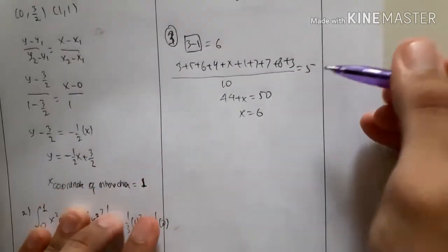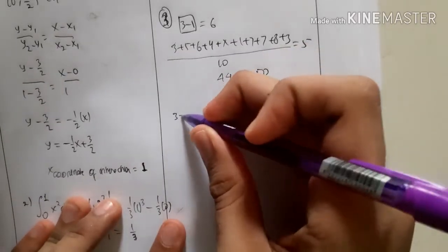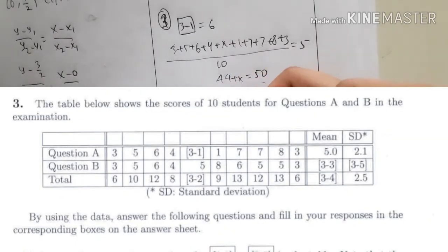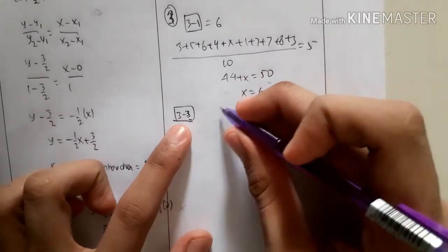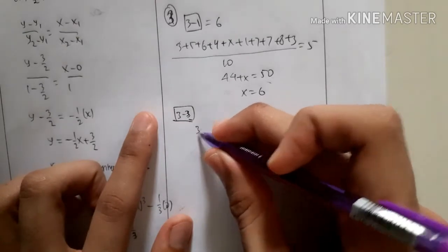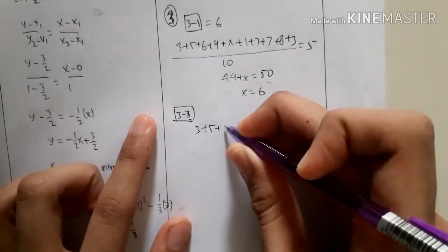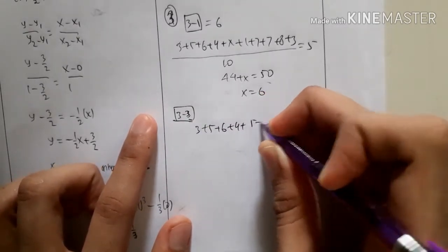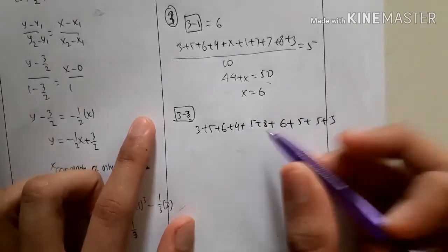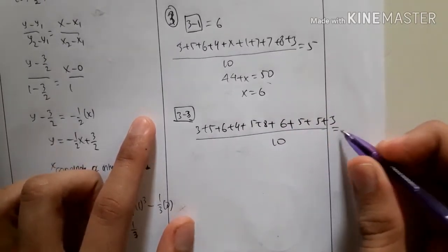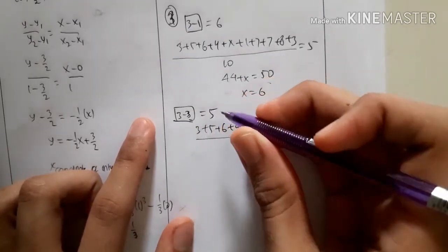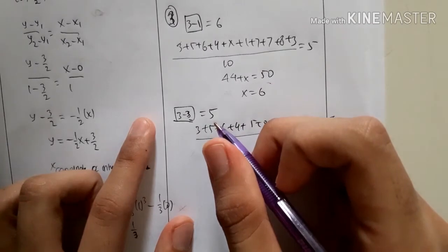Let's find Box 3-3 first and discuss standard deviation later. Box 3-3 is just finding the mean: 3 + 5 + 6 + 4 + 5 + 8 + 6 + 5 + 5 + 3 divided by 10, which also equals 5. So Box 3-3 is 5.